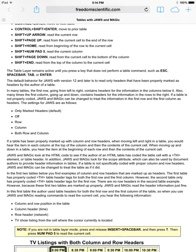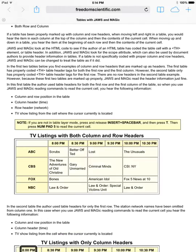The first table has the name of the network down the left side and the show times across the top. The text that VoiceOver read when entering the table — 'a table that has...' — is the summary attribute being read by VoiceOver as you enter the table.